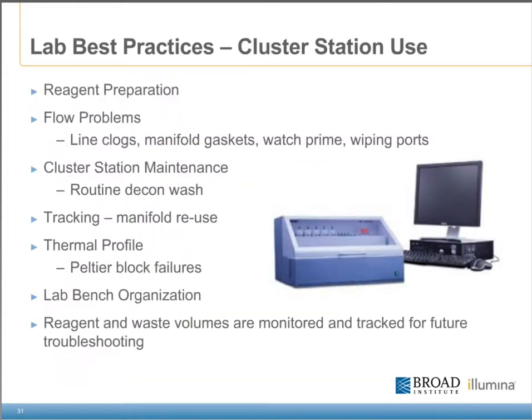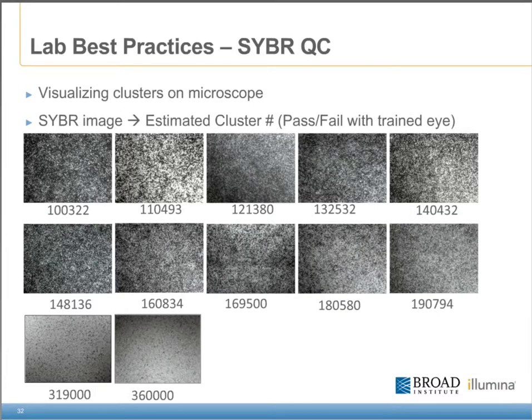It's pretty clear that introducing variation earlier in the process can affect your cluster counts. Automating most of this process has helped us to alleviate the effects of small-volume pipetting and user variability. From qPCR to strip tube generation, everything in our process is automated. We also store denatured libraries for reuse in case we need to create more data for a sample without introducing the variation seen in replicates. Other lab practices include ensuring that cluster stations undergo routine decon washes at least once per week, as well as our reagent tracking system and verifying proper flow on the cluster station.